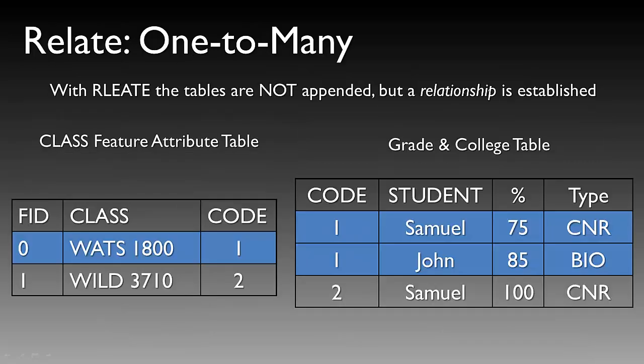In an example of a relate, we have a one-to-many operation. Remember that with relates, tables are not appended but a relationship is established. Rather than making one table, we have two tables with a linkage between them so we can see where relationships occur based on a common ID field. On the left, we have a table representing a spatial data layer — note the FID — that identifies classes and code. The code is our primary key that will link to another table.